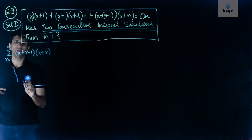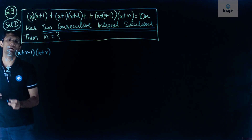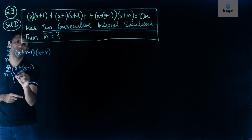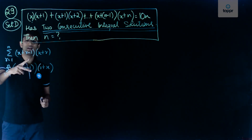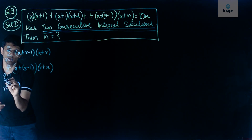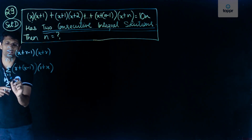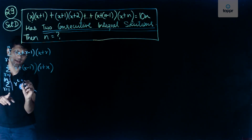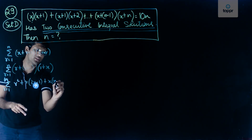This summation can be rewritten as summation from r = 1 to n of (r + x - 1)(r + x). Now this product can be expanded as r² + r(2x - 1) + x(x - 1).